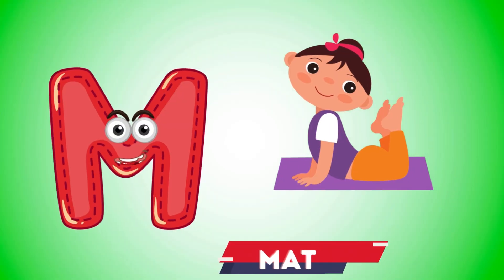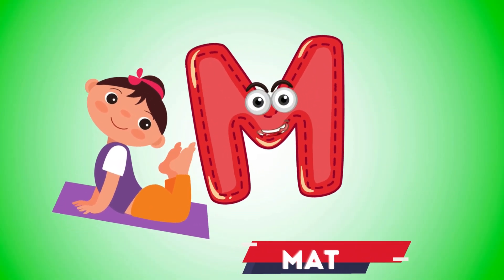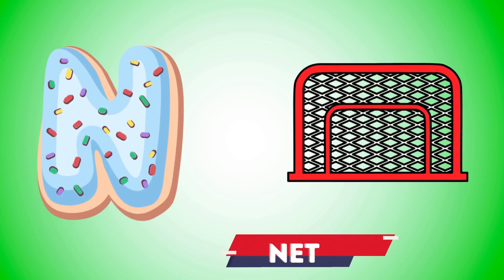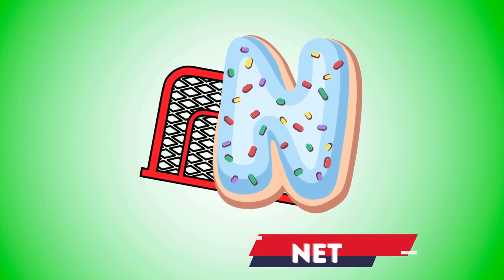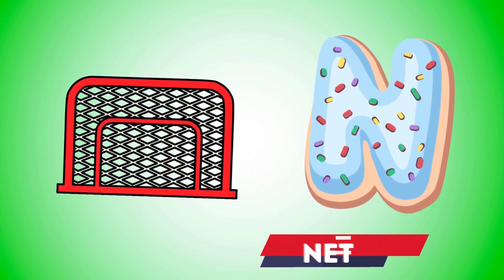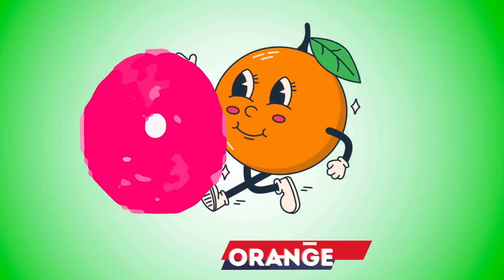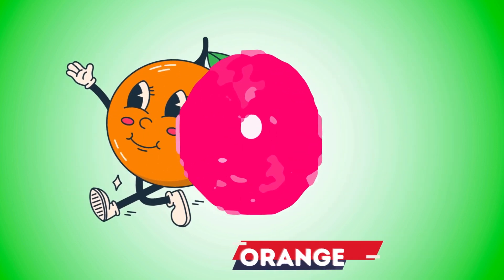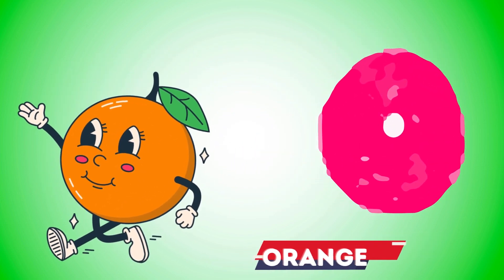M is for mat, m-m-mat. N is for net, n-n-net. O is for orange, o-o-orange.